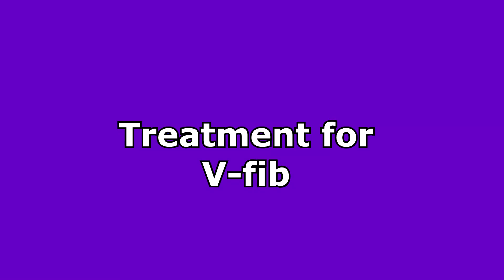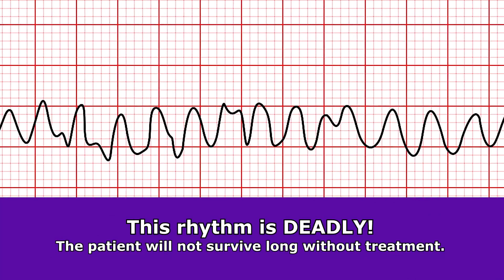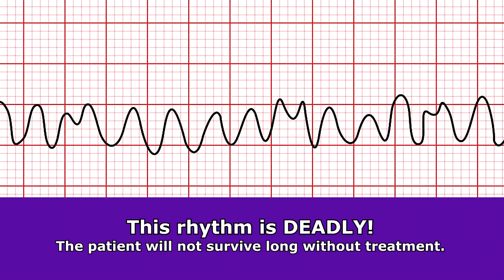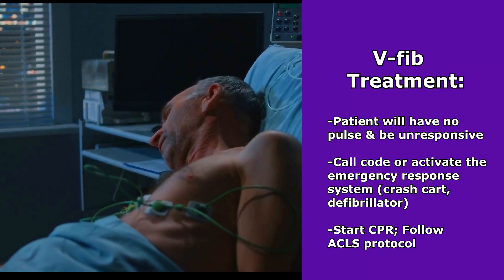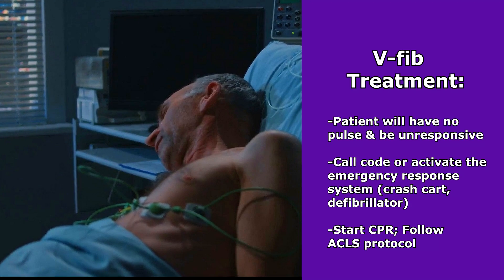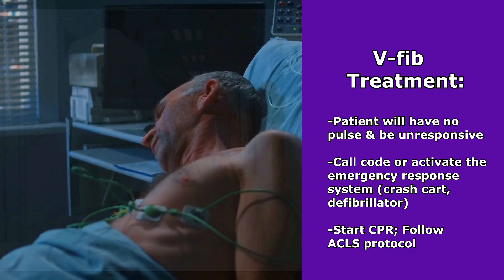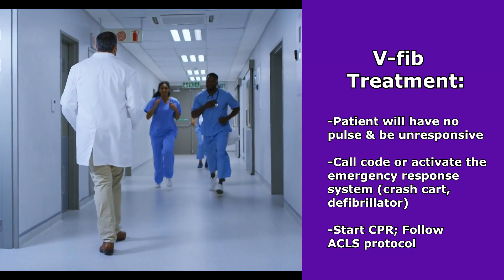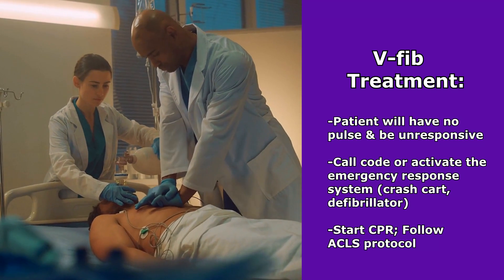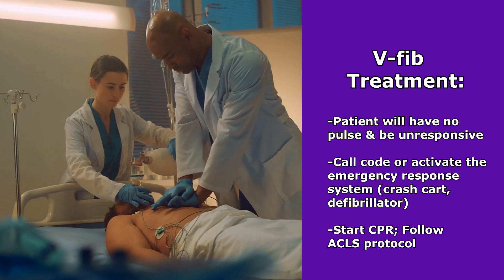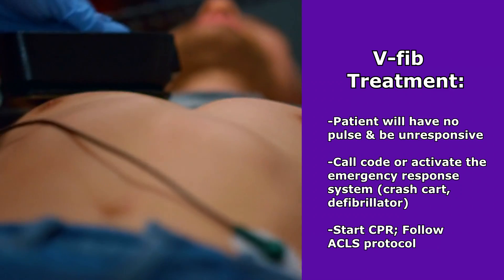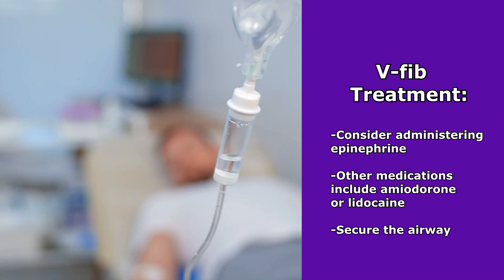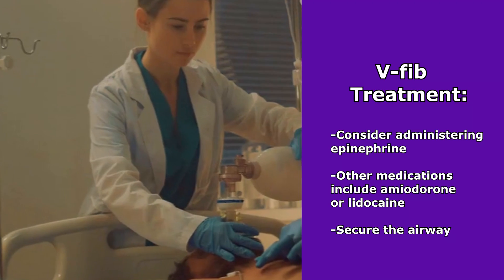Now let's talk about the treatment for V-Fib. This rhythm is deadly, so your patient isn't going to survive very long without treatment — they're going to be unresponsive and not have a pulse. You want to get help immediately, call a code or activate the emergency response system in your area, and start CPR immediately following ACLS protocol. You'll be doing chest compressions, defibrillation, giving epinephrine and other medications like amiodarone and lidocaine, and securing that airway.